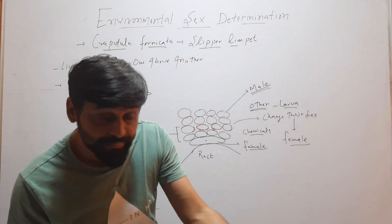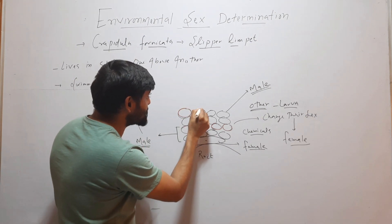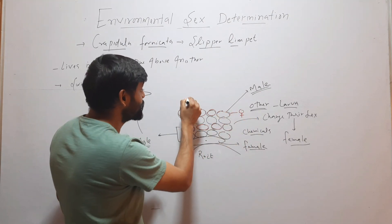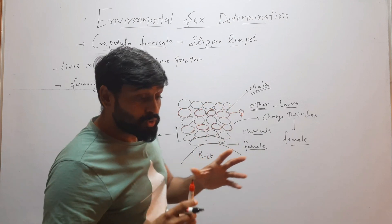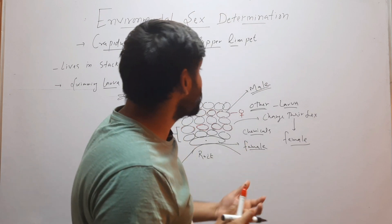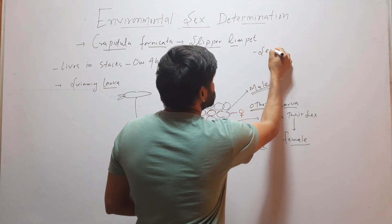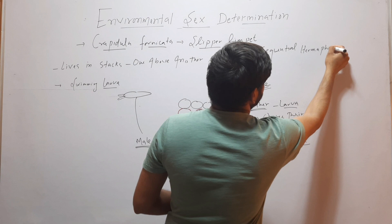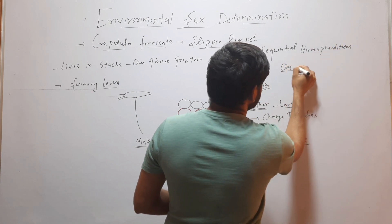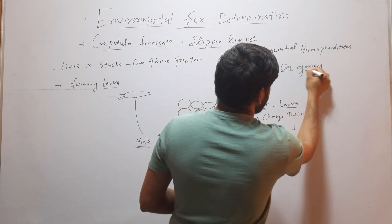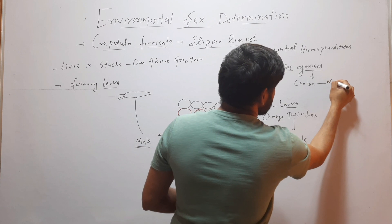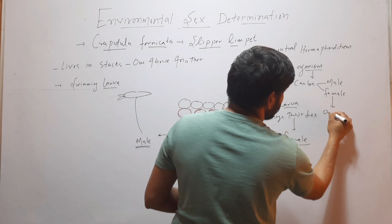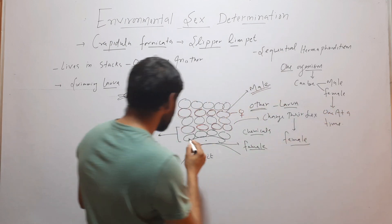After some time, the upper organisms will again change their sex and become female, then others will come and become male. This type of sexual reversal is called sequential hermaphroditism, in which one organism can be male or female, but only one at a time.